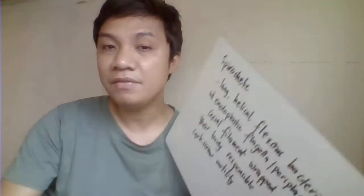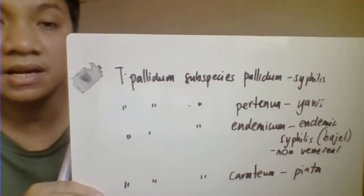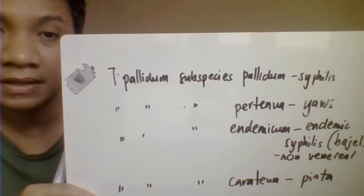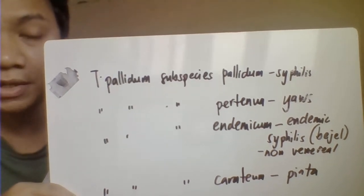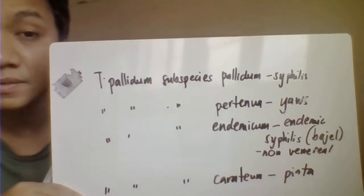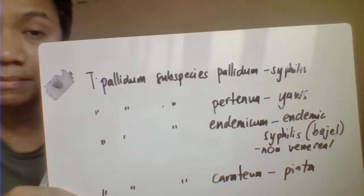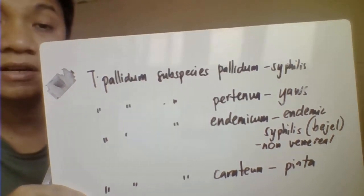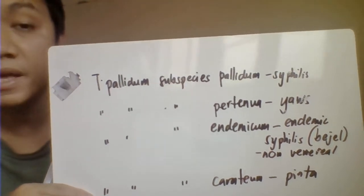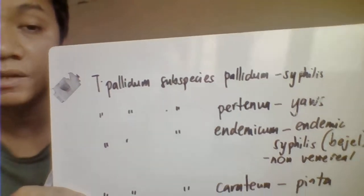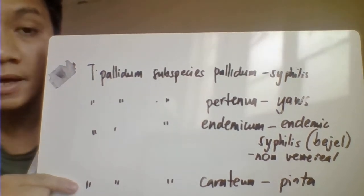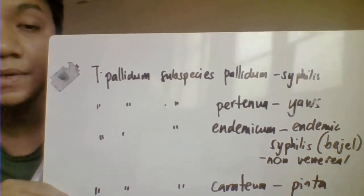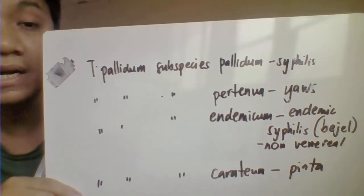Treponema is divided into subspecies. Treponema pallidum subspecies pallidum is the causative agent of syphilis. Subspecies pertenue causes yaws. Treponema pallidum subspecies endemicum causes endemic syphilis or non-venereal syphilis, also called bejel, which is non-sexually transmitted. And Treponema pallidum subspecies carateum causes pinta.